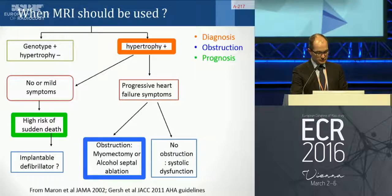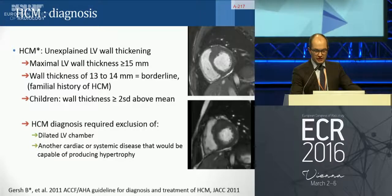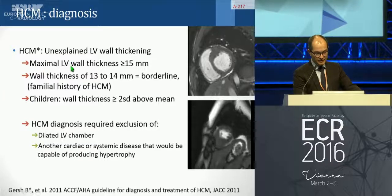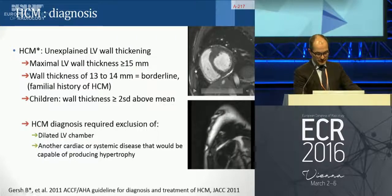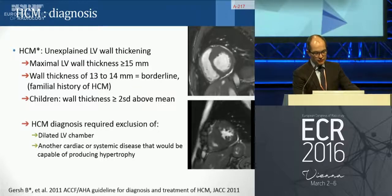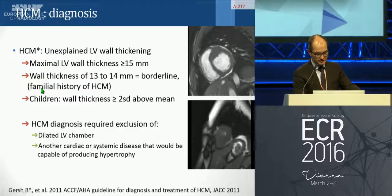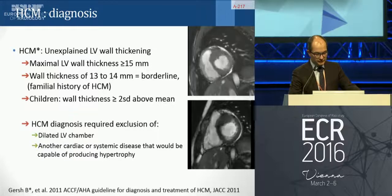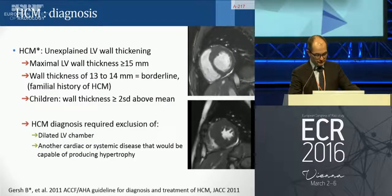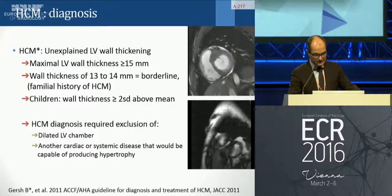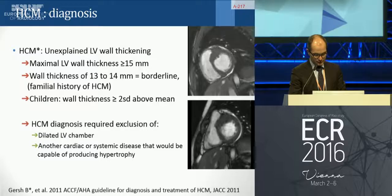CMR can help in the characterization of this disease — in the diagnosis, definition of obstruction, and prognosis. The phenotype is precisely characterized by maximal LV wall thickness greater than 15 mm. Wall thickness between 13 to 14 mm is borderline, and you have to implement other factors such as familial history of HCM. In children, wall thickness should be measured based on normal values adjusted for age.